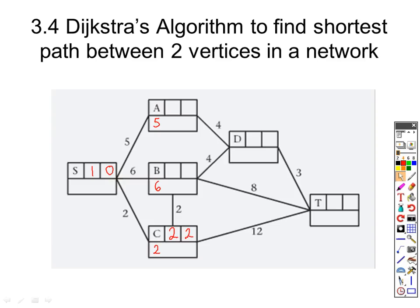Now where do we go from c? From c I can go across to t which will take me 12 more, so the total journey time would be 14. Or I could go up to b which will take me 2 more, giving me a total journey time of 4. We now have two numbers at the bottom of the b box. We want to use the smallest one of those numbers, so we don't need to worry about the 6. We look at the boxes with numbers at the bottom and pick the smallest one — that's 4, which is b. So this will be our third point.